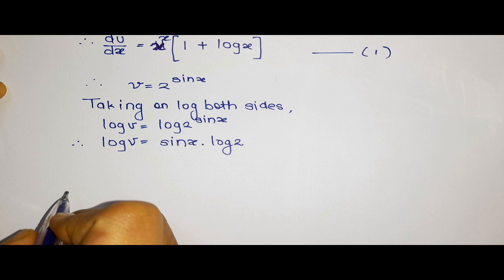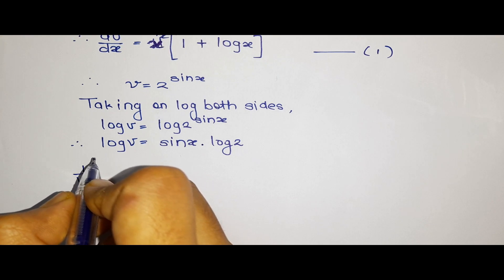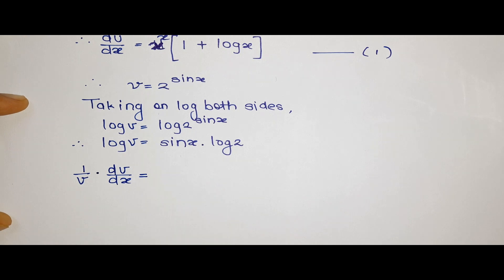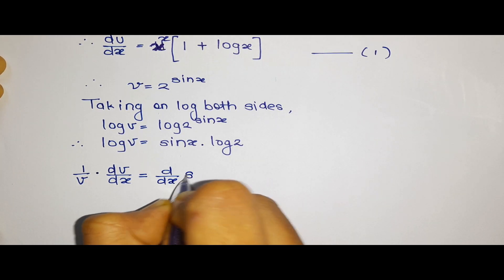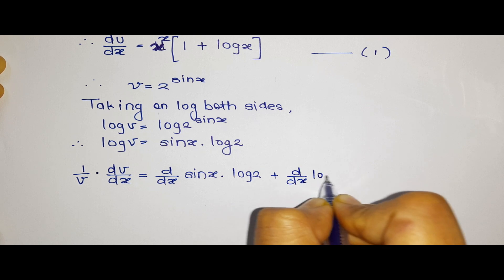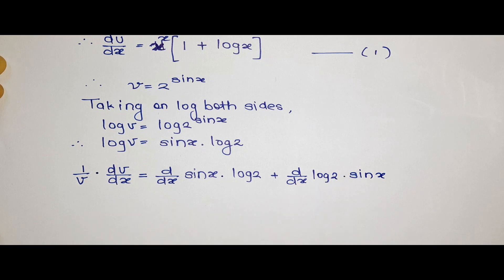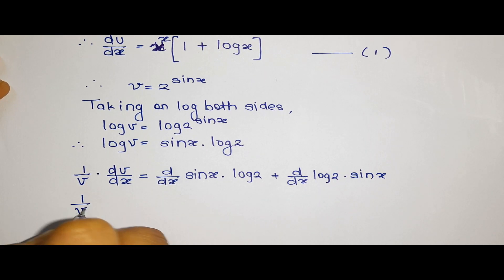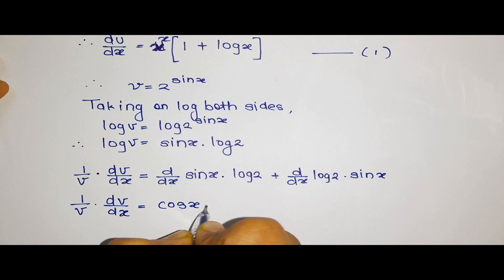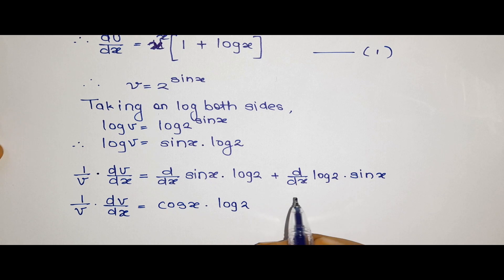Now we differentiate both sides. We get 1 by v into dv by dx on the left side, since d by dx of log v is 1 by v. On the right side, we apply the product rule: d by dx of sin x into log 2, plus sin x into d by dx of log 2.